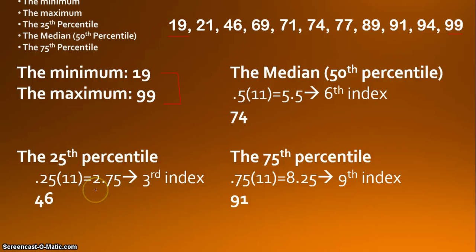Of course, when we're calculating percentiles, when we get a decimal value for our index, we simply round up to the nearest whole number, and that would be 3. And so we look for the number in the third index, the third number in our data set, 1, 2, 3. And we get the number 46. So 46 marks our 25th percentile.